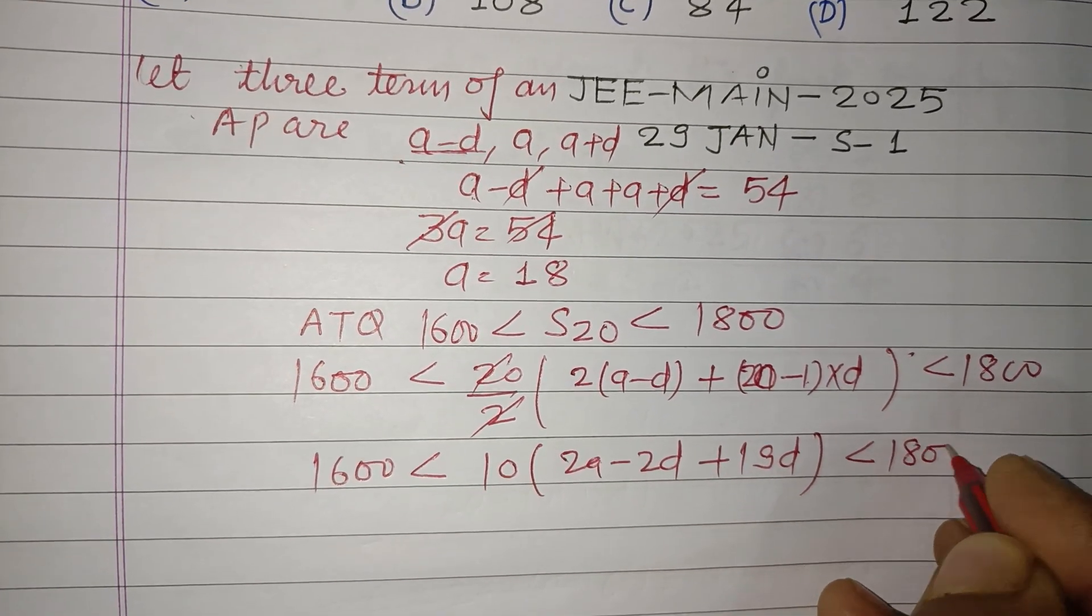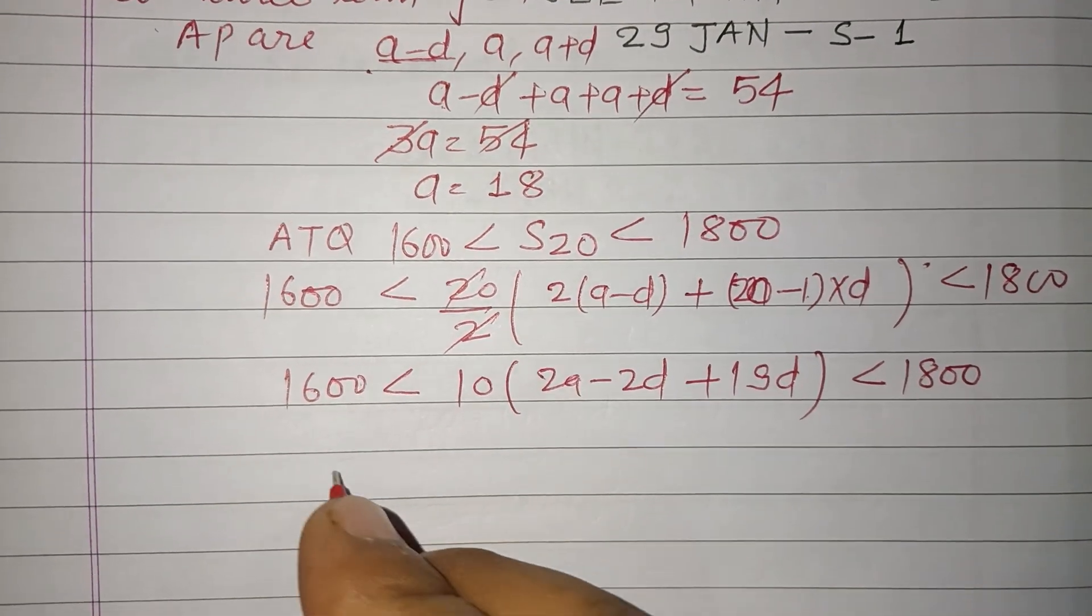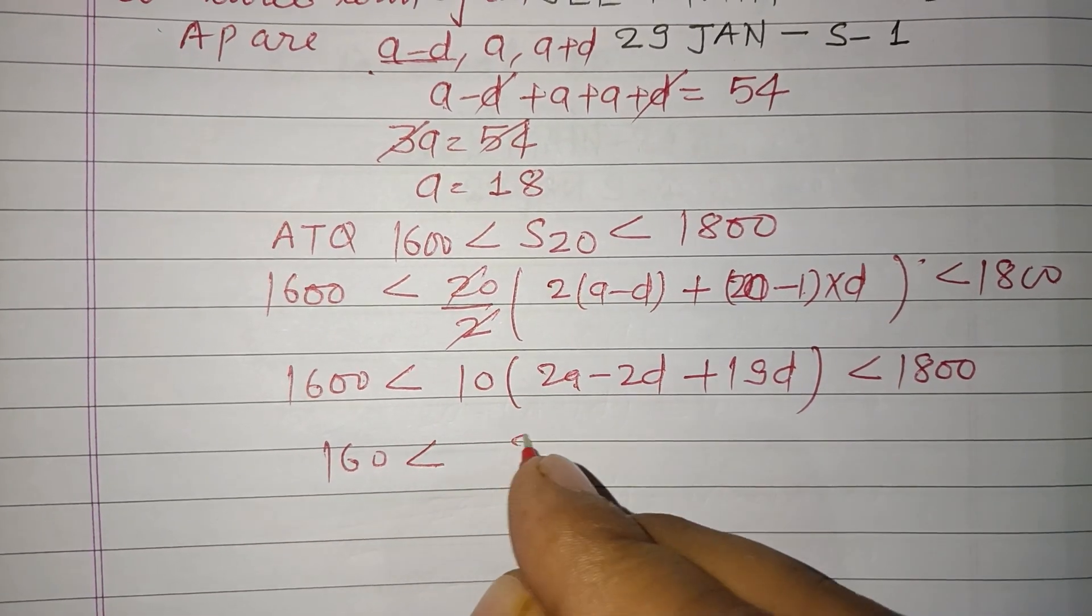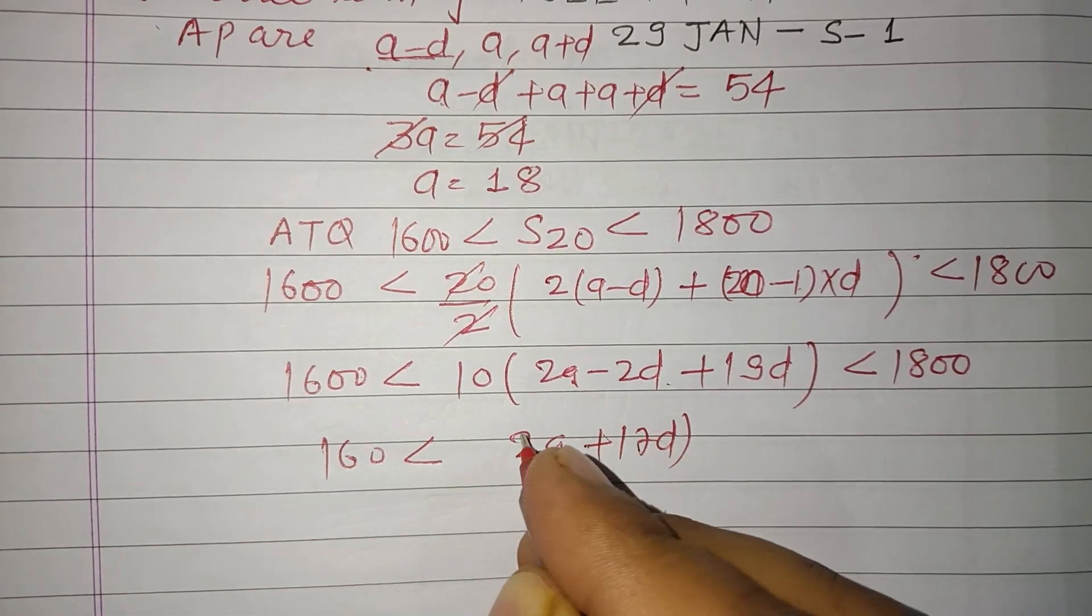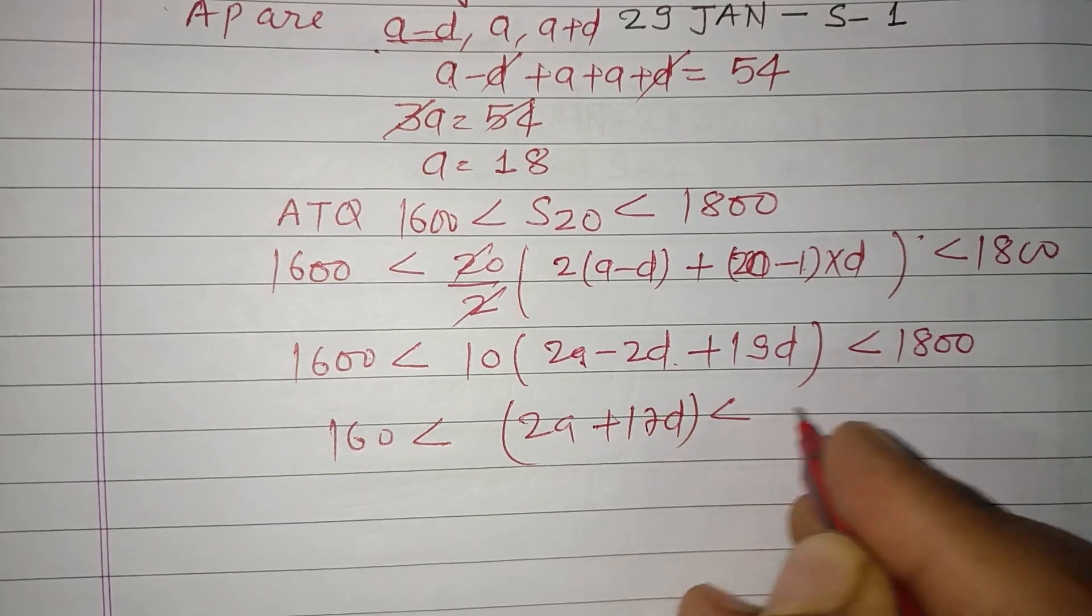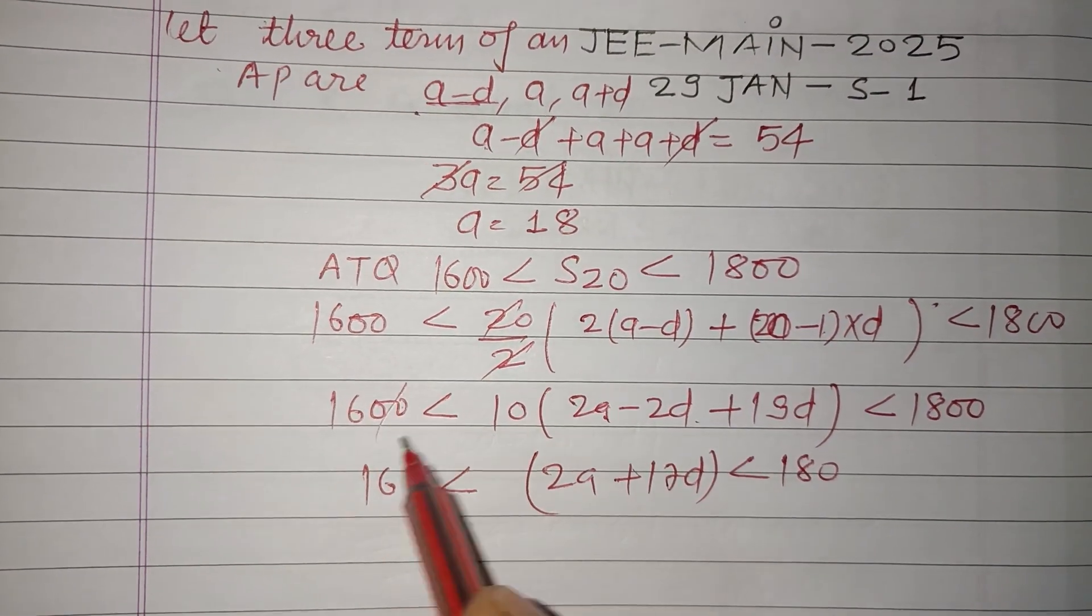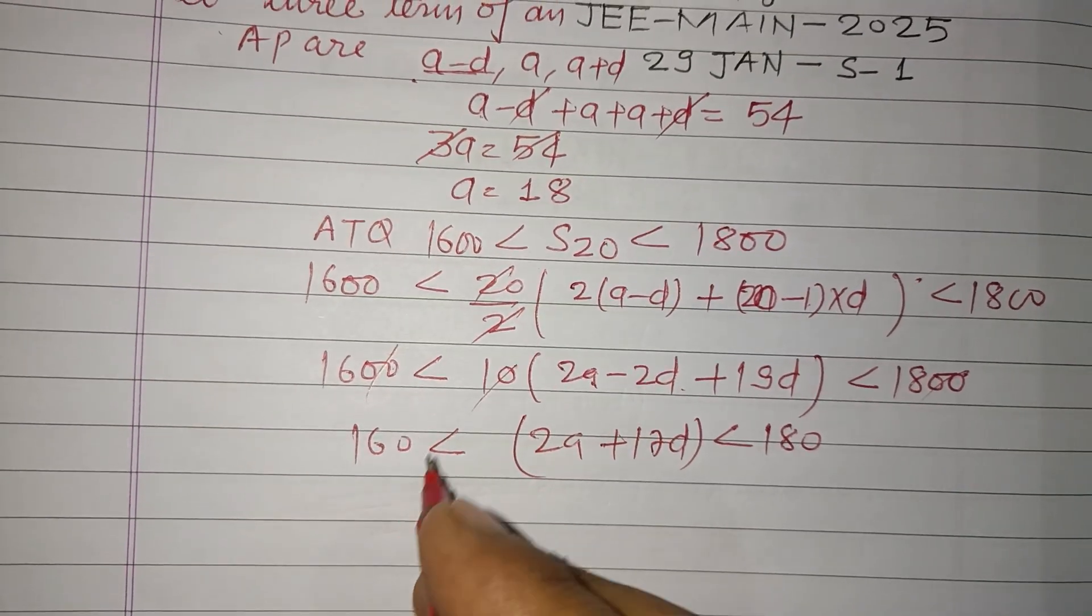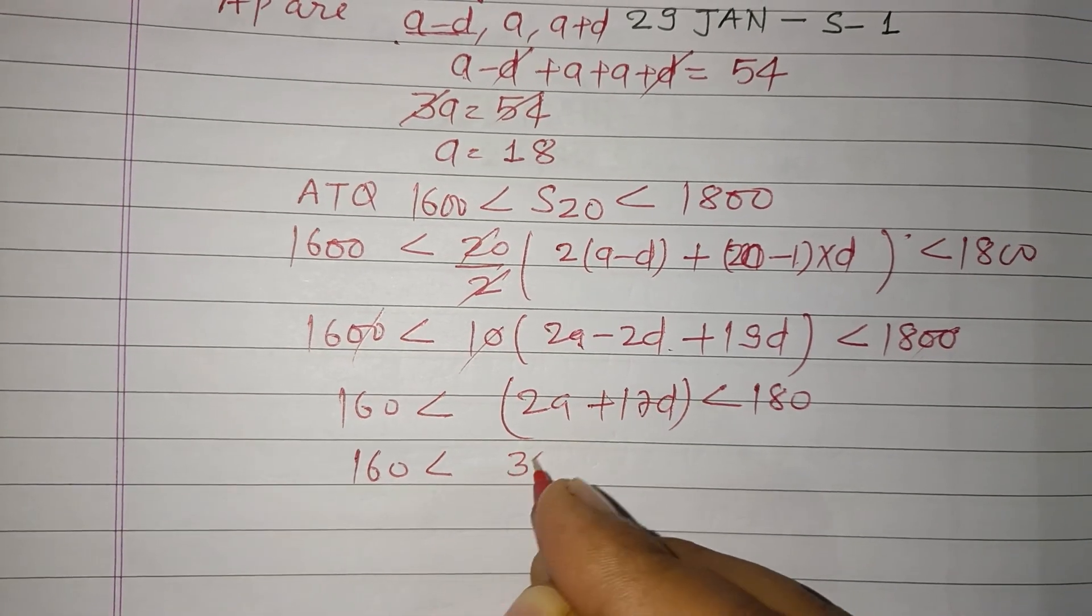Less than 180. So we got 160 less than 2A plus 17D, 2A plus 17D less than 180. We got value of A which is 18, so 160 less than 18 times 2, 36, plus 17D less than 180.